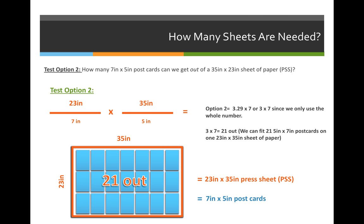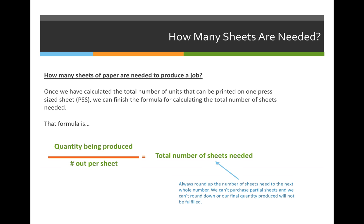Once we've calculated the number of postcards or items that will fit on each press sheet, we can use that to calculate the total number of sheets that we need to purchase for our job. That's where our number of sheets needed formula comes into play. So now that we know the number out, we will take the quantity of the item that we are producing and divide it by how many of that item we can fit on every one sheet of paper.